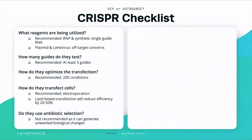Do they use antibiotic selection? This is a common way of shortening turnaround time; however, we do not recommend it, as it can generate unwanted biological effects. You technically still should be doing a single-cell cloning protocol after antibiotic selection if you go down that route, because you still need to isolate genetically pure populations.